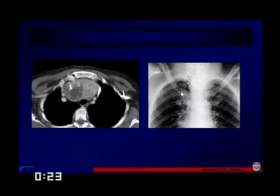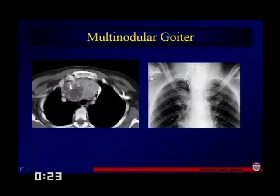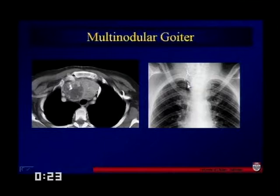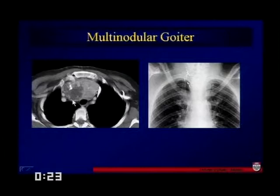This is a case of a retrosternal thyroid or multinodular goiter extending deep into the mediastinal region. On the radiograph we have resection of the right side of the thyroid already, and significant tracheal deviation from the large left-sided mass towards the right. Further down, it's inhomogeneous with a large low-density area and some calcification. We don't readily see the left innominate vein crossing in front of it — this is not only a large retrosternal goiter, but it's also causing vascular compromise.